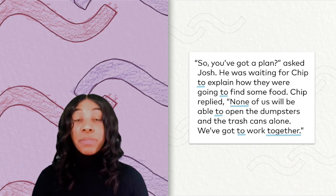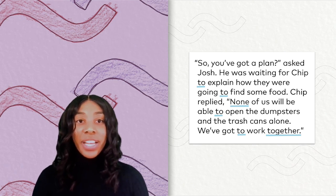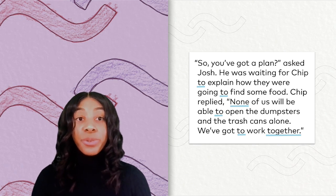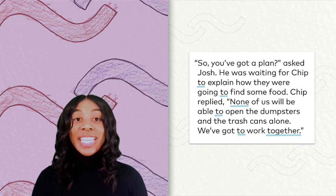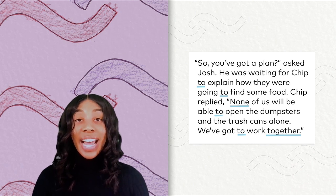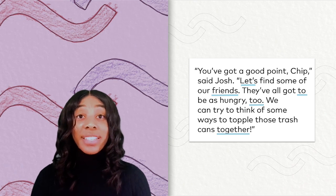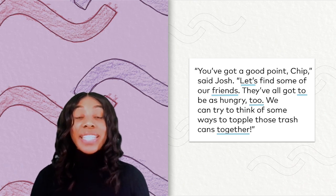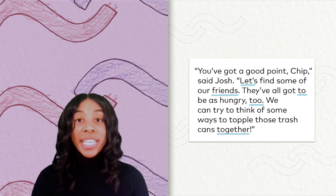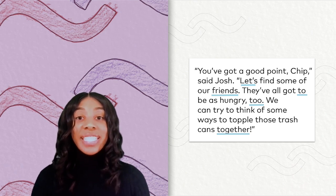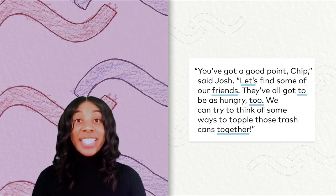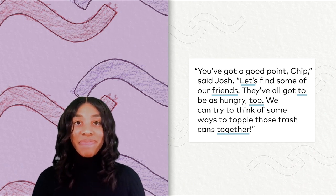Make sure that you're watching out for those blue lines as we continue to read so you know when to jump. You are listening for the words: two like the number, too spelled T-O-O, friends, let's, people, together, none, and finally. 'You've got a good point, Chip,' said Josh. 'Let's find some of our friends. They've all got to be as hungry too. We can try to think of some ways to topple those trash cans together.' As you can see, we had a lot of high-frequency words this time. Be on the lookout.